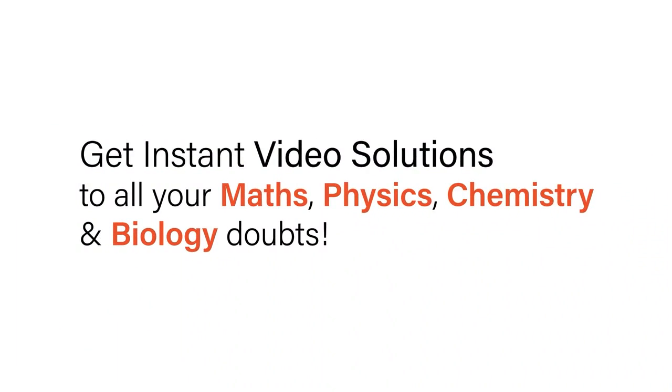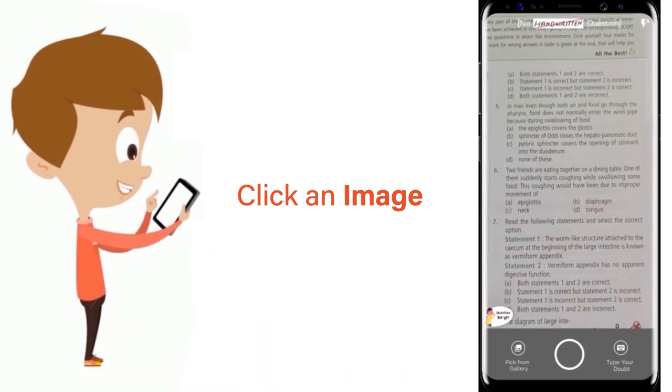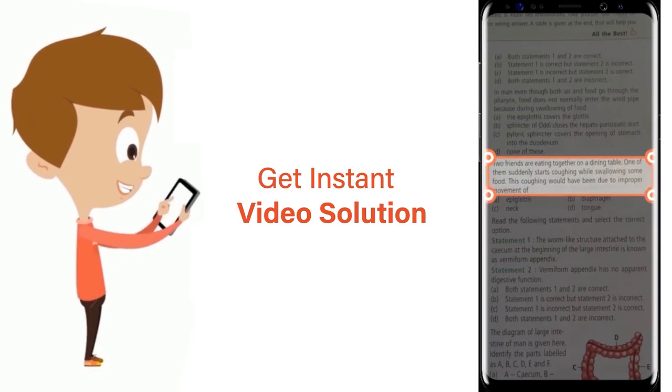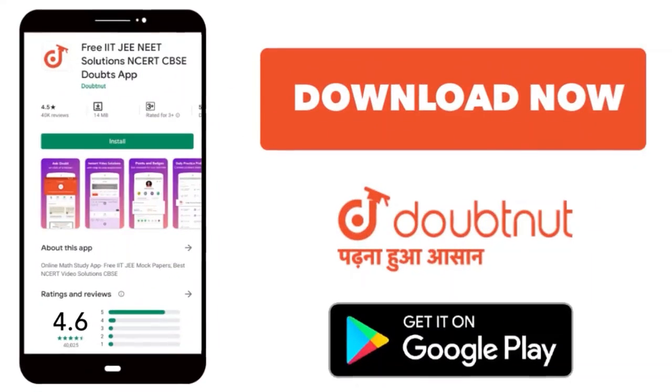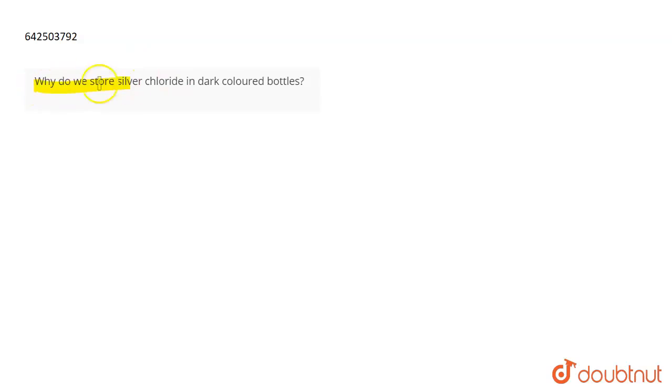With Doubtnet, get instant video solutions to all your maths, physics, chemistry, and biology doubts. Just click the image of the question, crop it, and get instant video solution. Download Doubtnet app today. The question is: Why do we store silver chloride in dark colored bottles?